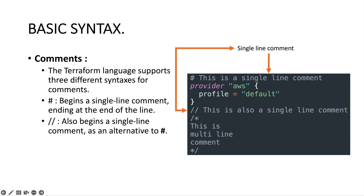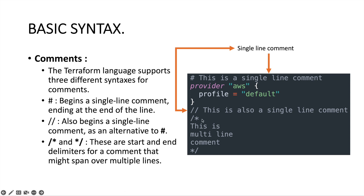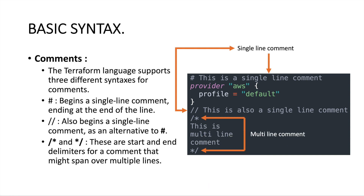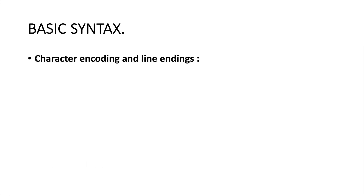So we can either use a hash or a double slash to indicate a single-line comment. If you have multiple lines that need to be commented, we can use slash-star at the beginning and star-slash at the end, which indicates a multi-line comment. If you want to comment out multiple lines at the same time, simply use /* at the beginning and */ at the end, and Terraform understands that you want to comment out multiple lines.